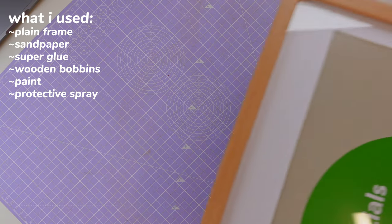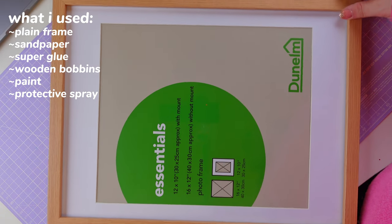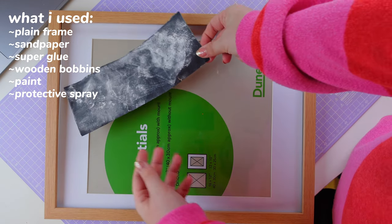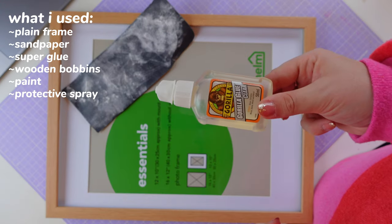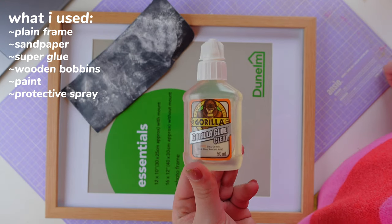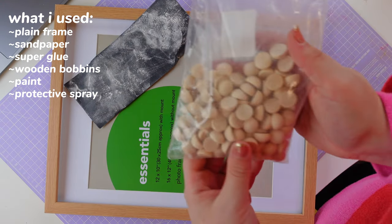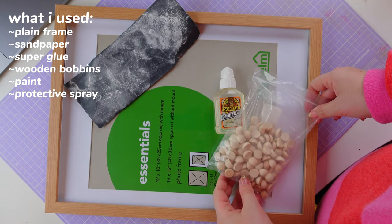Let's get into it. So here's what I'm using. I'm starting with a plain frame, some sandpaper, some super glue, this is just clear Gorilla Glue and these little half wooden balls.